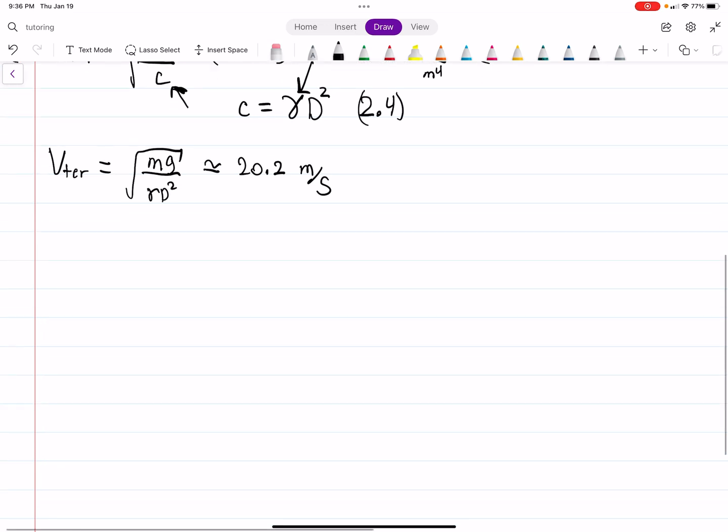So for part B, right, our free body diagram looks a little something like this. Gravity pulling down, some drag force, and we'll let down be positive. So in this case, or for Newton's second law, we get this equation.